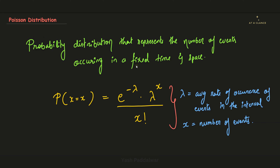Poisson Distribution is a probability distribution that represents the number of events that occur in a fixed time and space. The formula is: probability of x equals to x is represented by e to the power minus lambda, multiplied by lambda to the power x, divided by x factorial. Lambda is the average rate of occurrence of events in the interval, and x represents the total number of events.